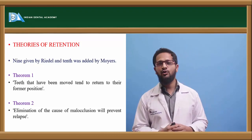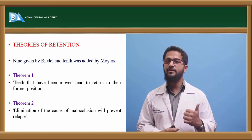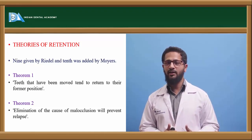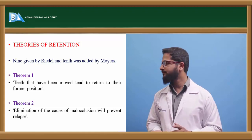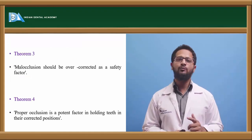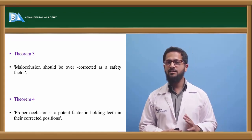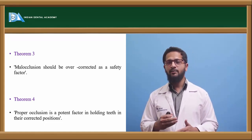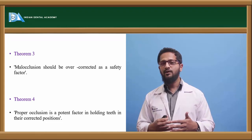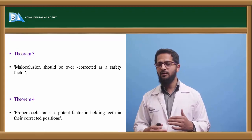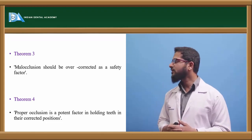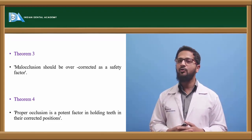The third theorem states that malocclusion should always be over-corrected as a safety factor, since some amount of relapse is natural to occur, and over-correction ensures relapse will not extend to a major extent. The fourth theorem states that proper occlusion is a potent factor in holding the teeth in their corrected position. Good interdigitation between upper and lower teeth itself acts as retention and prevents relapse.